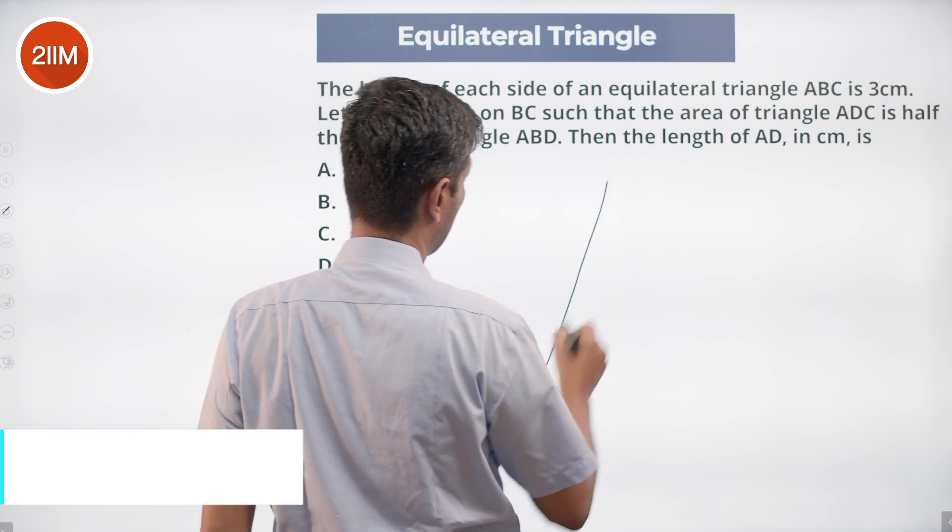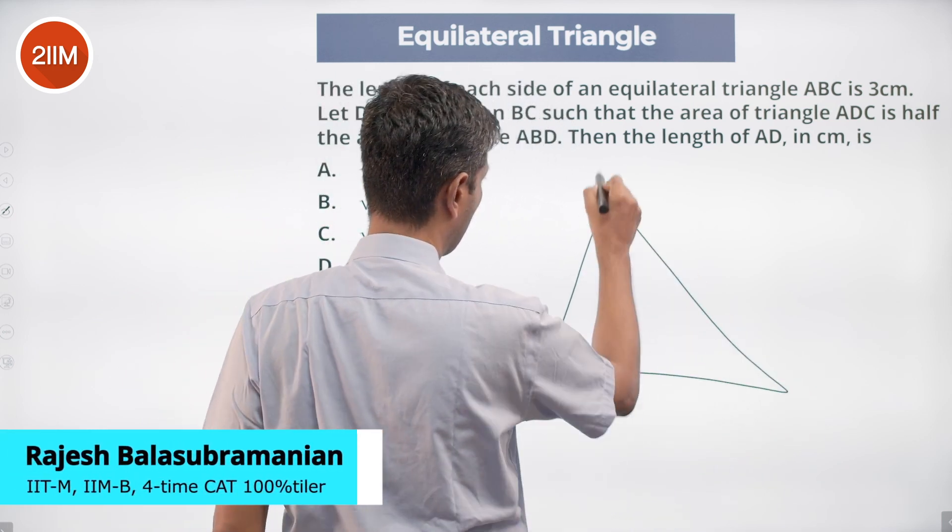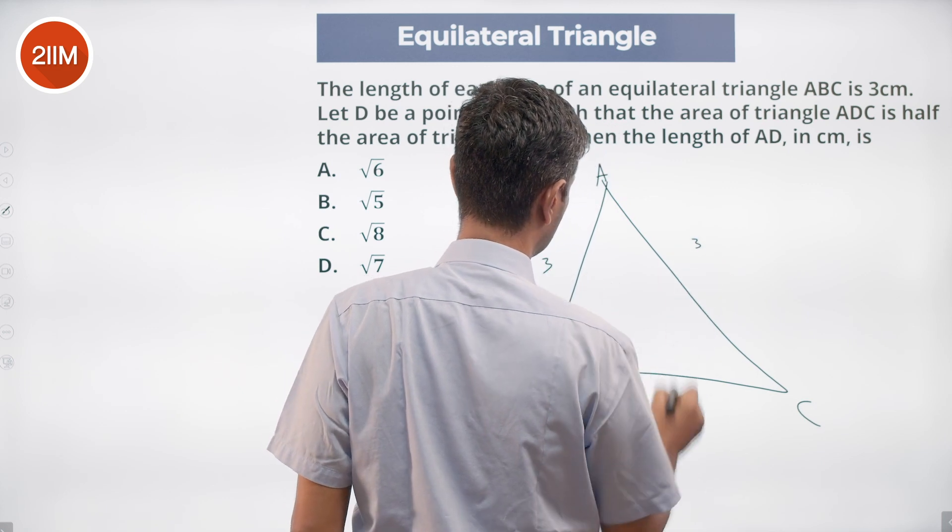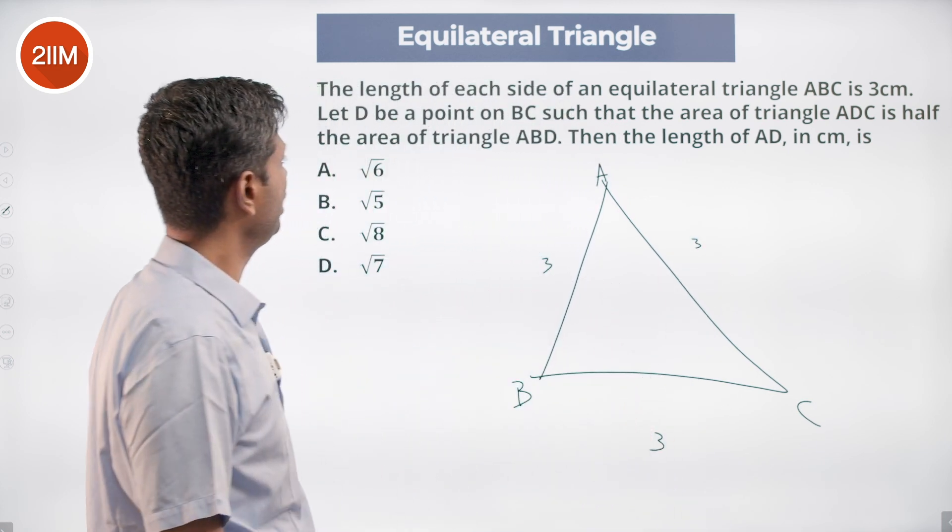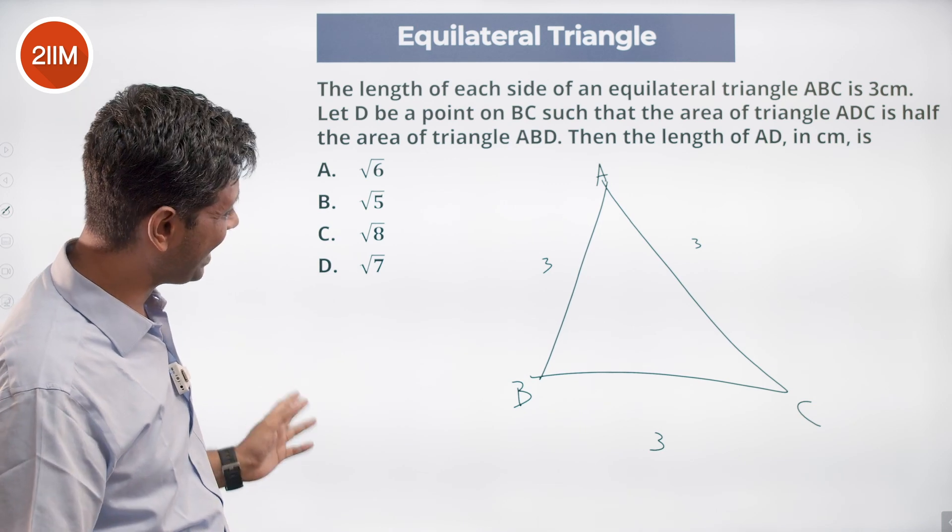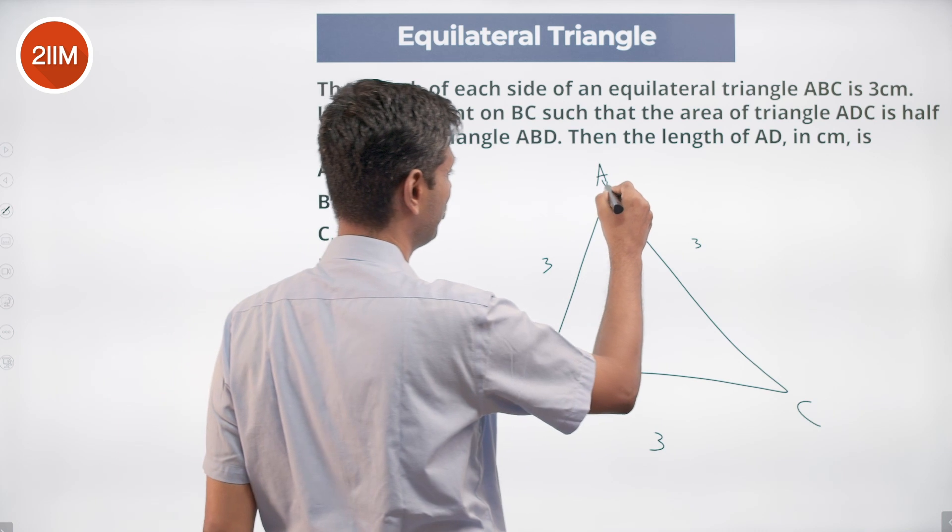The length of each side of an equilateral triangle ABC is 3 centimeters. Let D be a point on BC such that the area of triangle ADC is half the area of triangle ABD.